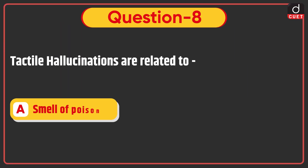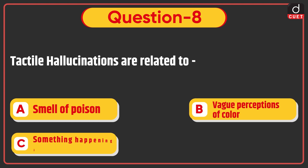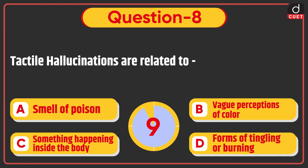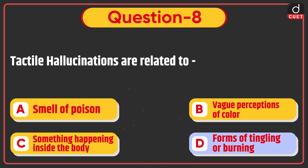Next question is: Tactile hallucinations are related to — smell of poison, weight, perceptions of color, something happening inside the body, or forms of tingling or burning? The correct answer is option D, forms of tingling or burning.